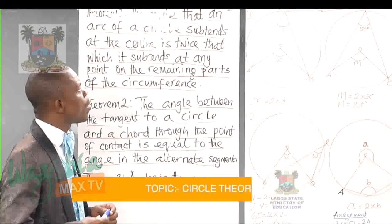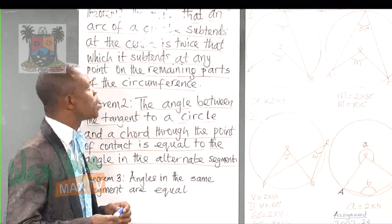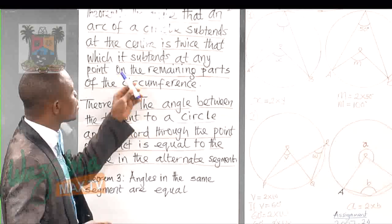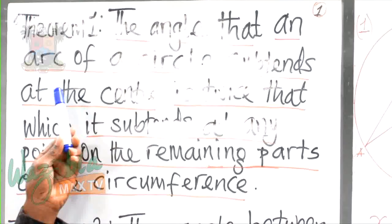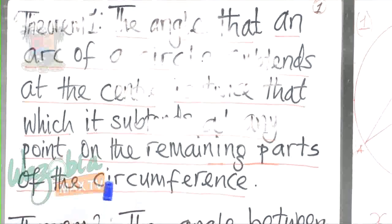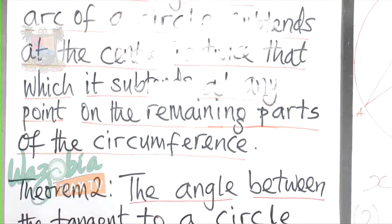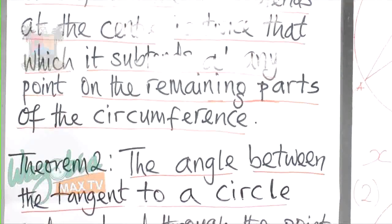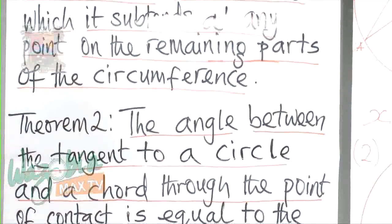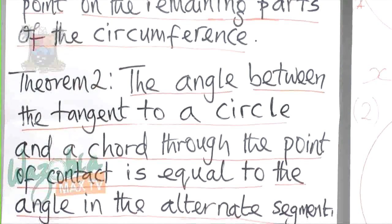In this class, I'm going to do justice to some of these theorems. One of the commonest is the first theorem: it states the angle that an arc of a circle sustains at the center is twice that which it sustains at any point on the remaining parts of the circumference. To help my students, I've decided to come up with a song, because this topic is one that students find somehow boring.